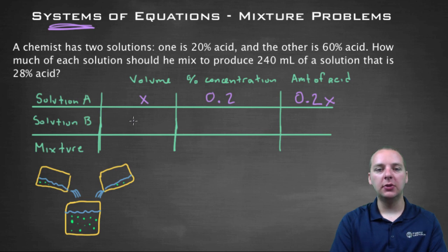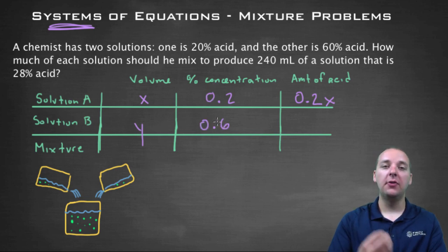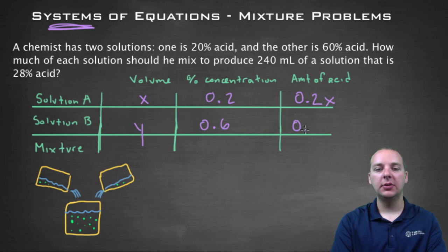Same thing for solution B. How much do we have? I don't know, it's not necessarily the same as X, it could be a different amount, so let's call it Y. The percent concentration, that's 60%, so we'll say 0.6. So the volume of acid will be the volume of the solution times how concentrated it is, so 0.6 times Y.